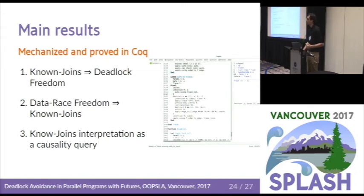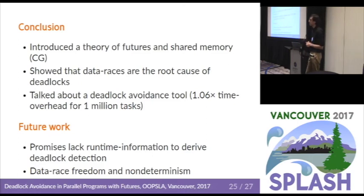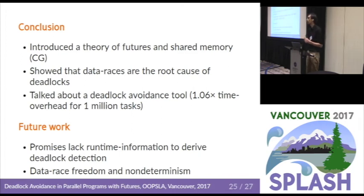In conclusion, we introduced a theory on shared memory and futures and showed the relationship between data race freedom and deadlock freedom in the context of futures. We also showed a tool with overhead of around 6-7% on programs up to a million tasks. For future work, we're looking at more general constructs like promises, which generalize futures by decoupling task execution from synchronization — essentially a rendezvous variable — though the challenge is that there's not enough information to detect deadlocks. We're also interested in proving how data race freedom influences determinism in computation graphs.